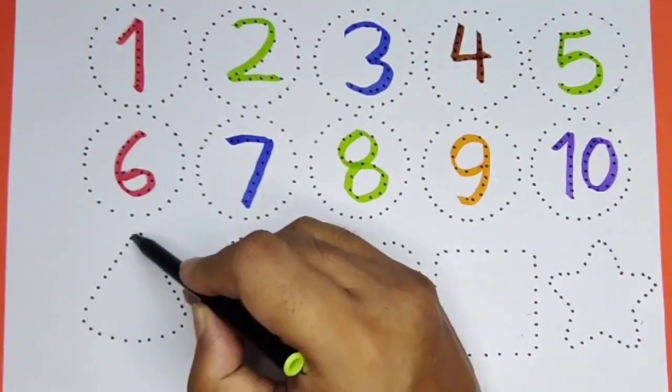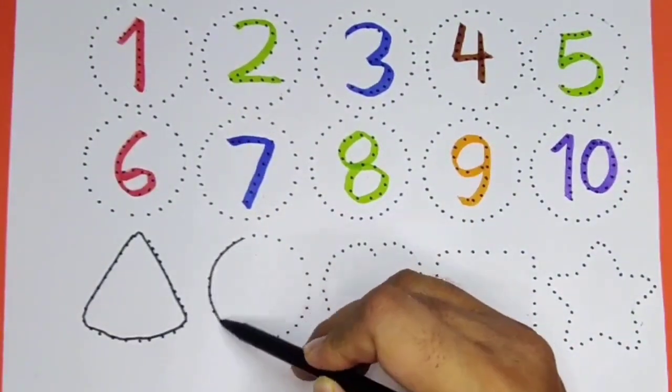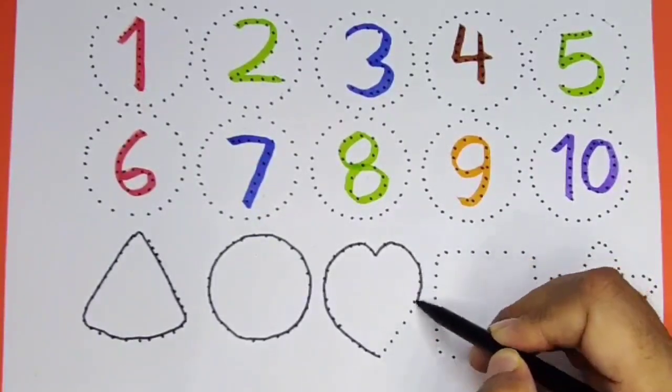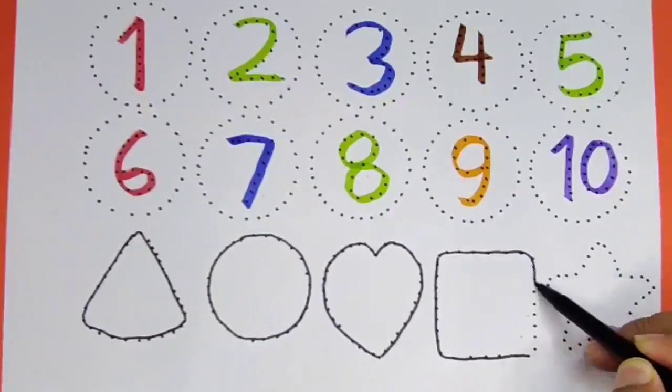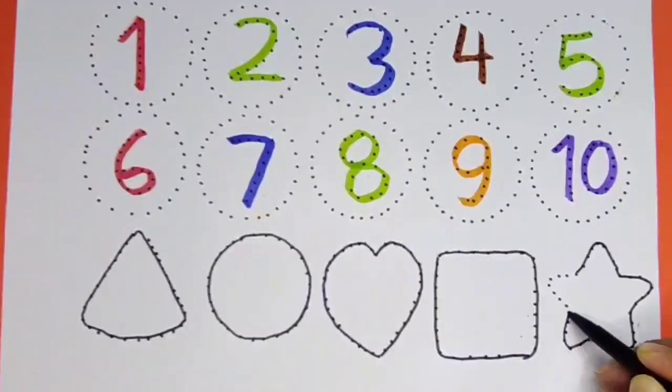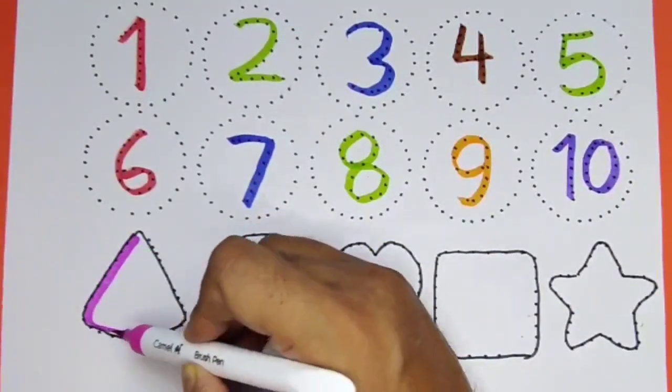Now borderline the shapes. Triangle. Now put the colors. Pink color.